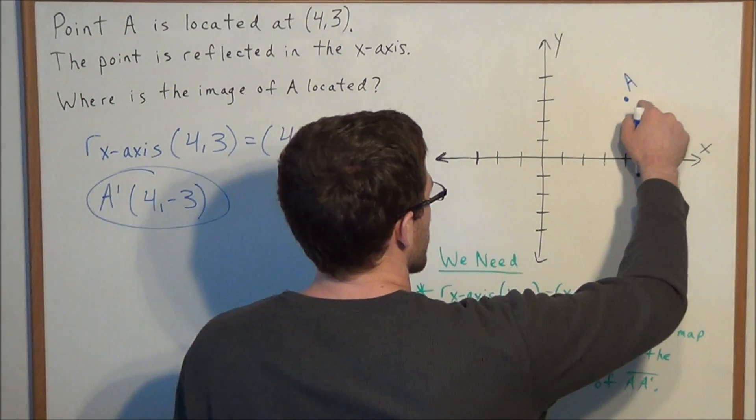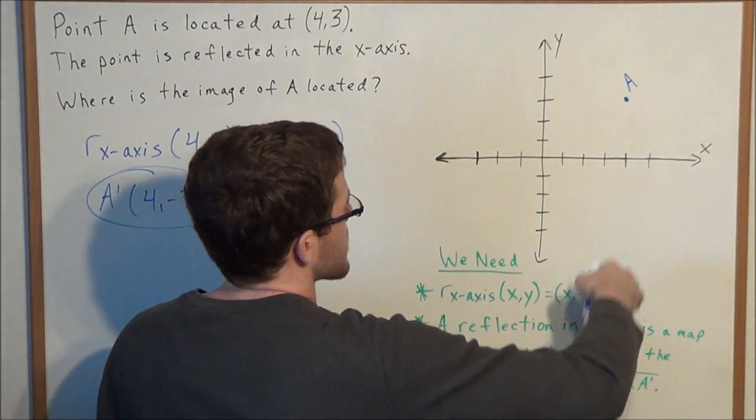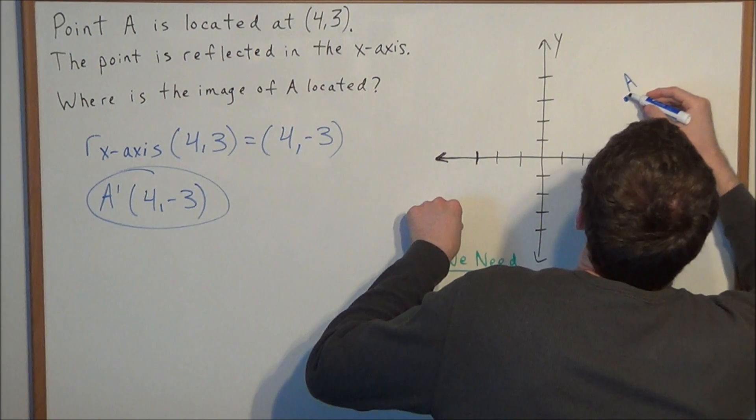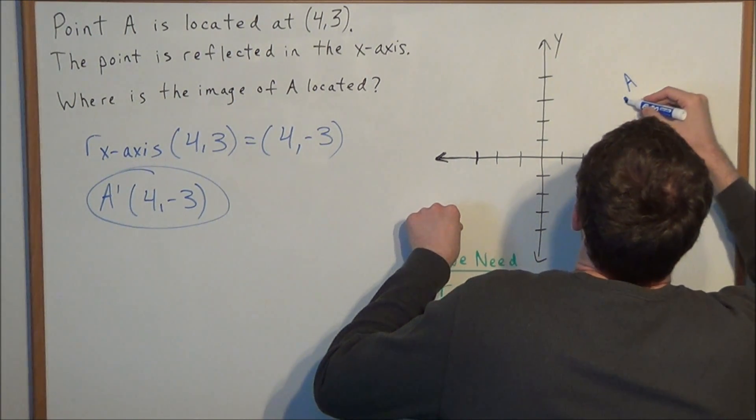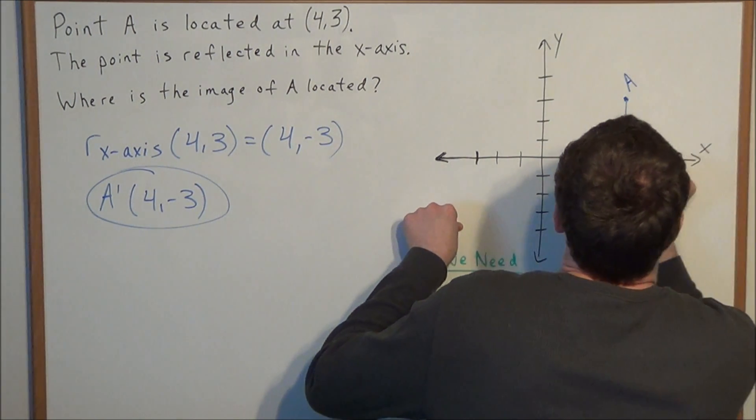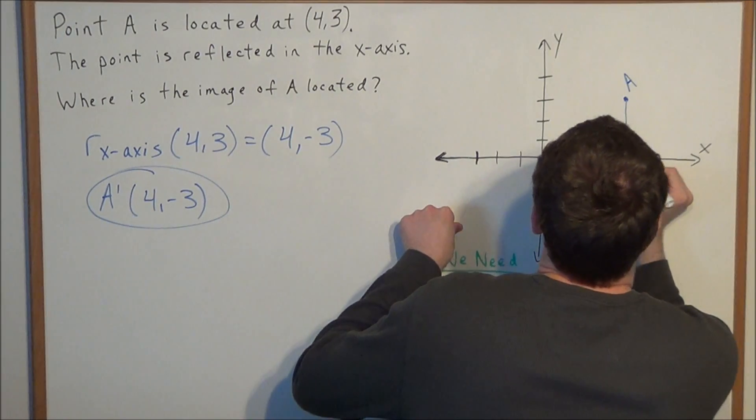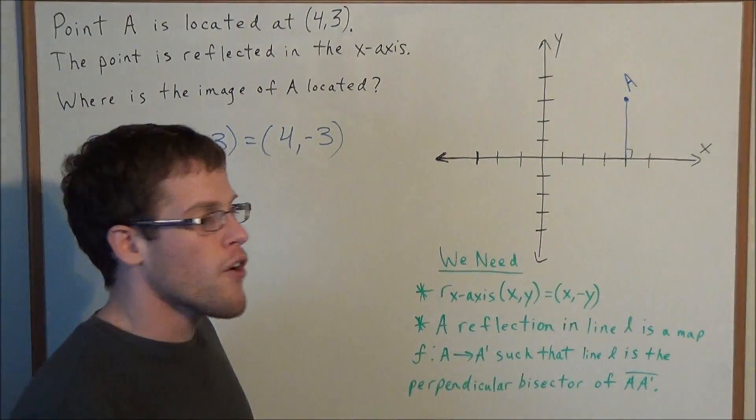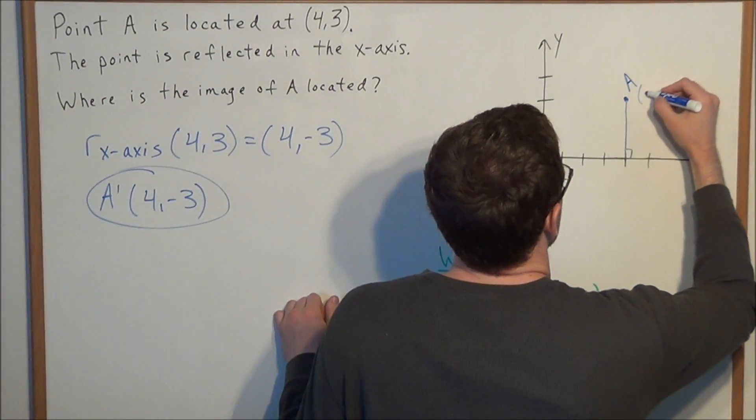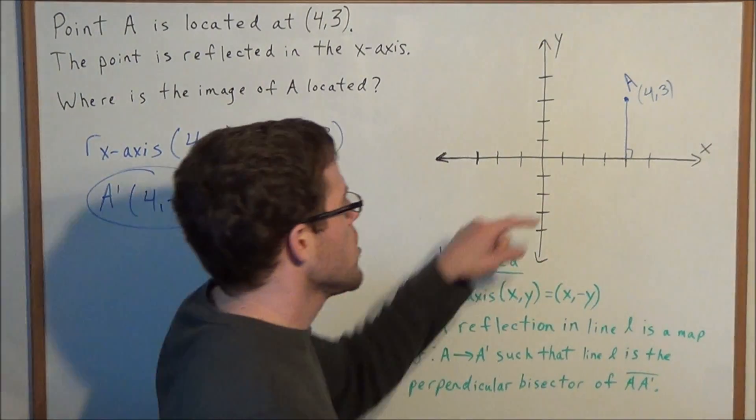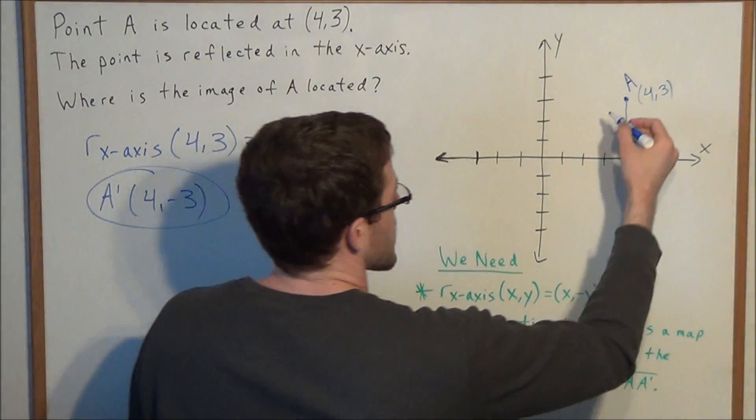We start at the point A, and we're reflecting in the x-axis, so we need to draw a perpendicular line to the x-axis. We're dropping down a perpendicular line. This will help us count how far away from the x-axis we are. If we're at the point (4,3), we're 3 units away from the x-axis.